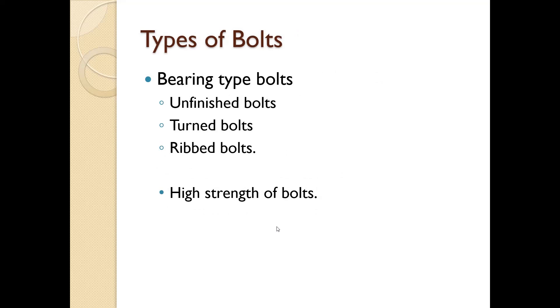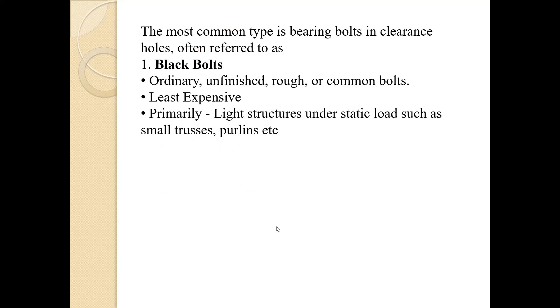Now the types of bolts. The bearing types of bolts are unfinished bolt, turned bolt, and ribbed bolt. And second is the high strength bolts. The most common type in bearing bolts in clearance holes is often referred to as black bolts. It is also called as unfinished bolt. These are ordinary, unfinished, rough, or common bolts. These are least expensive and primarily used for light structures under static loads, such as small trusses, purlins, etc.